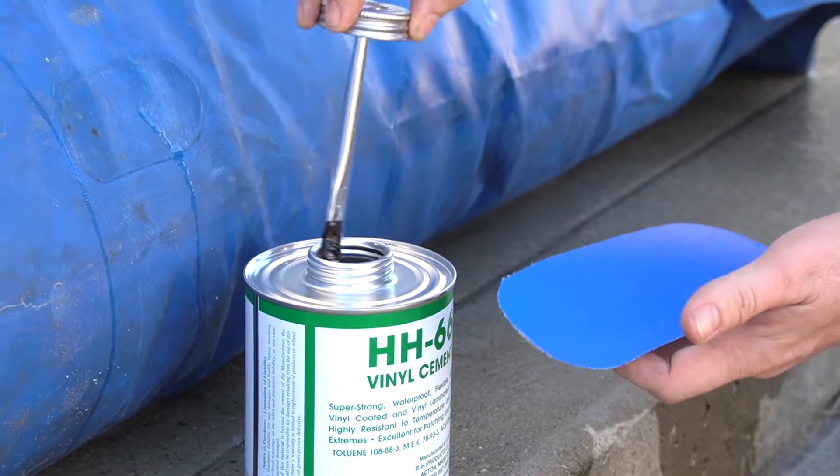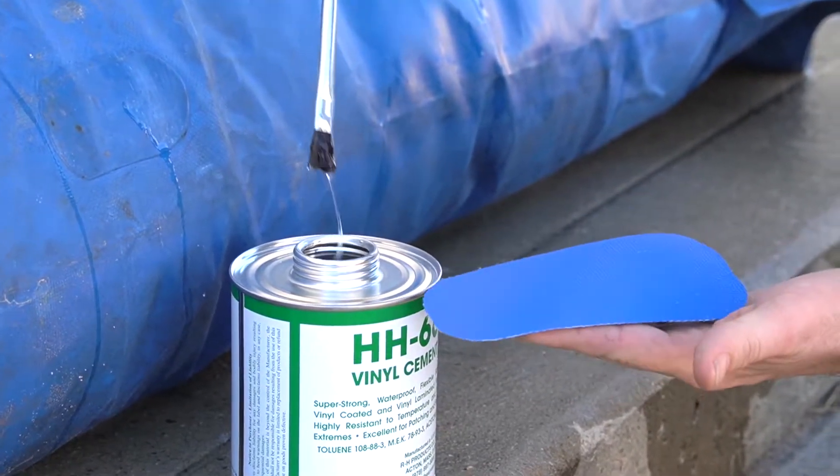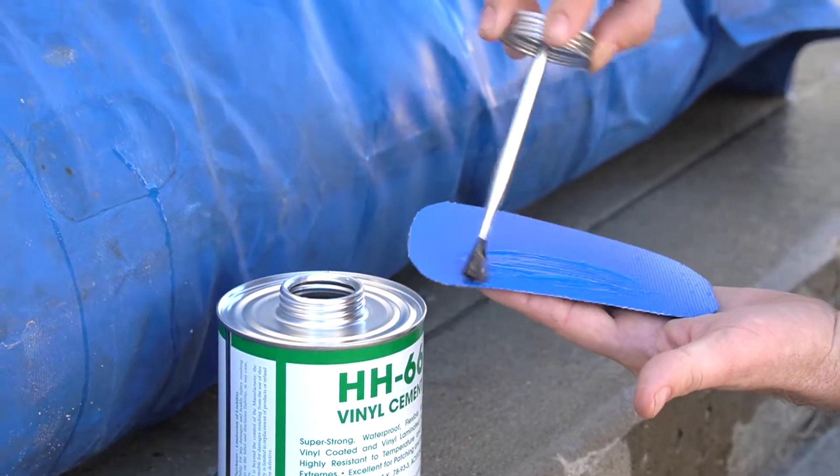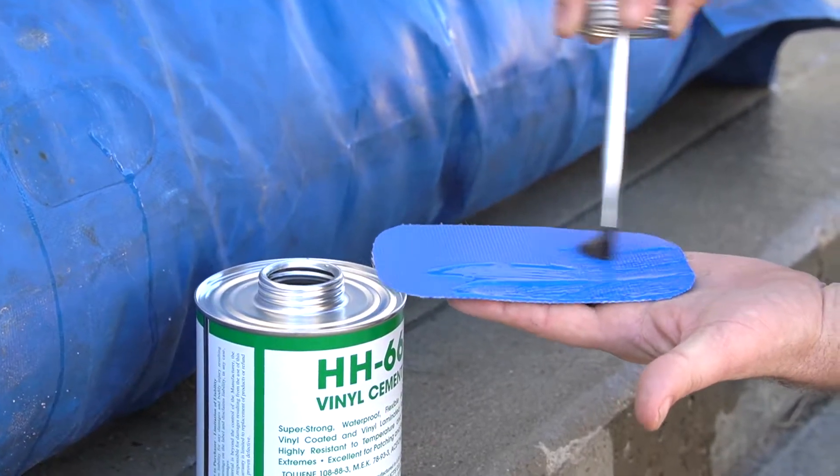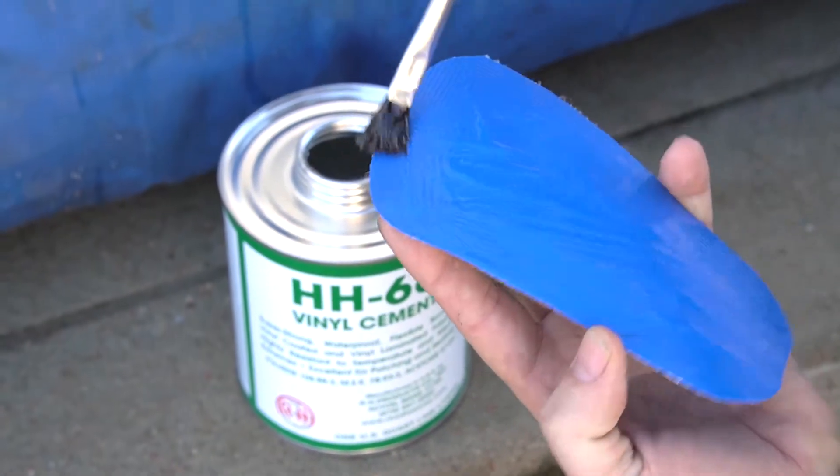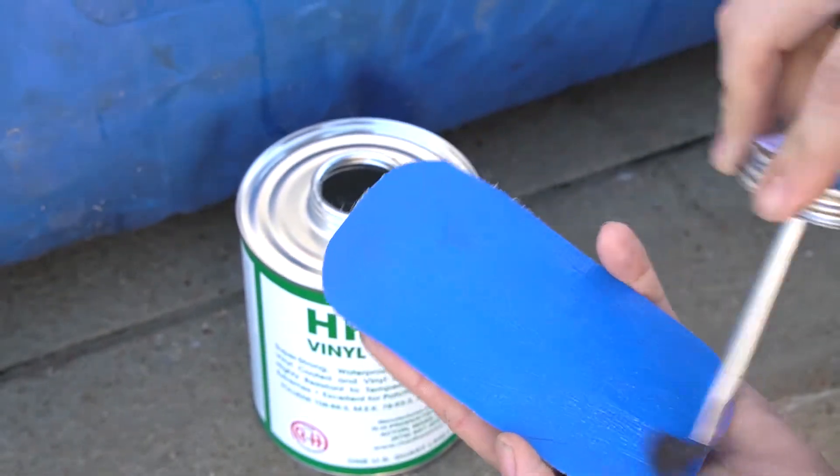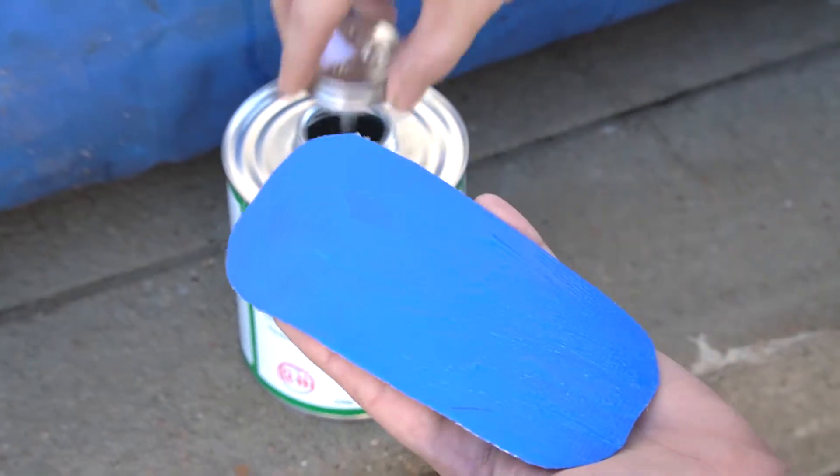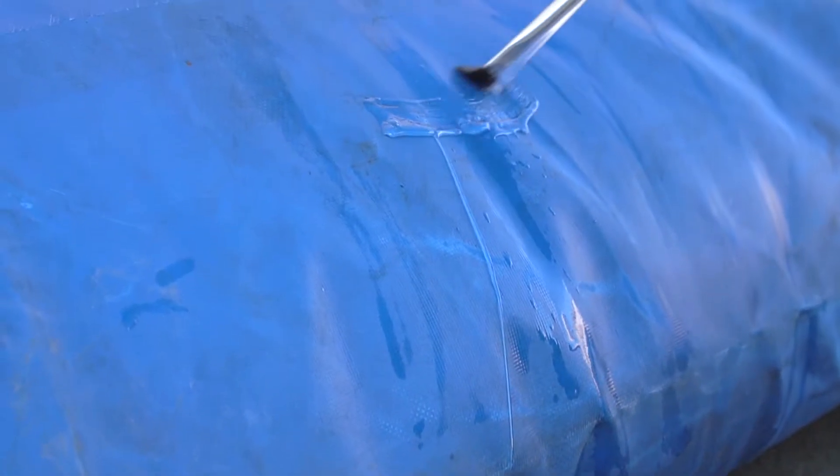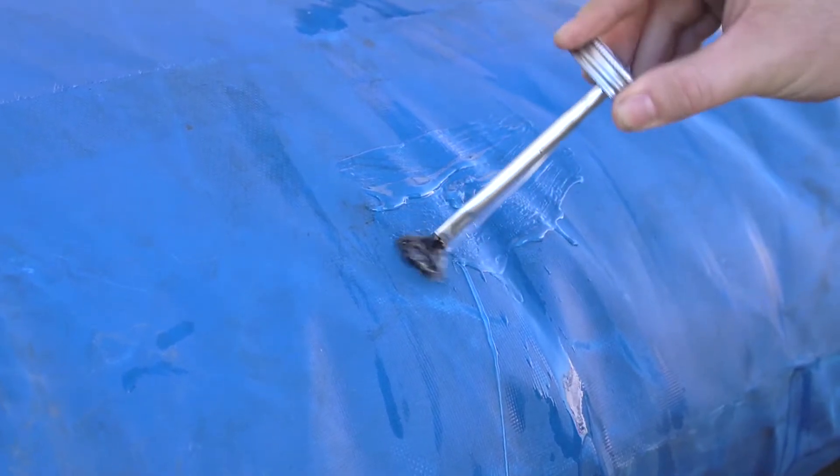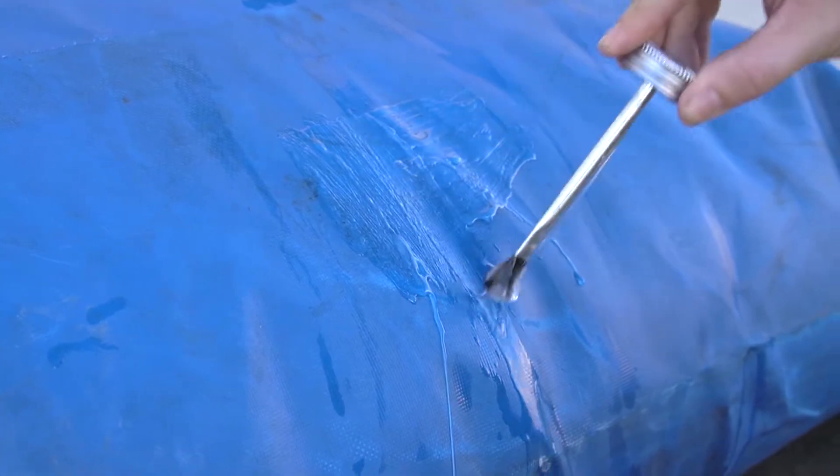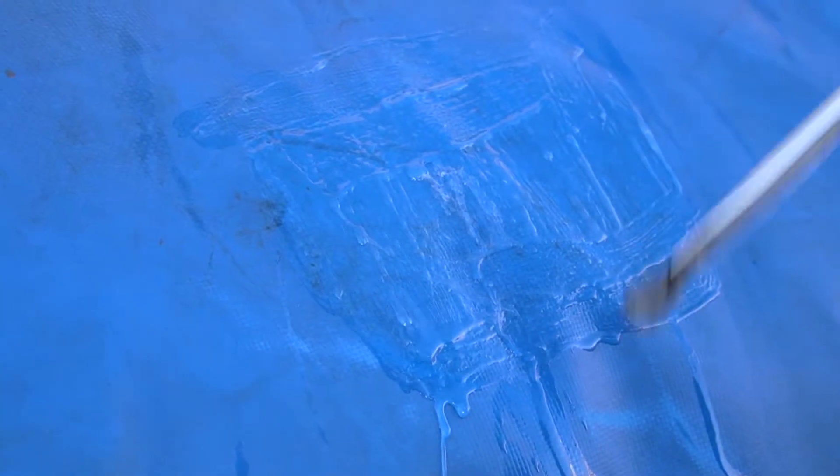Once the area is clean, use your vinyl cement to coat the smooth side of our Aquabarrier patch from center to edge. Then, apply the vinyl cement directly on top of the leak hole, as well as the area around the hole slightly larger than the size of your patch.